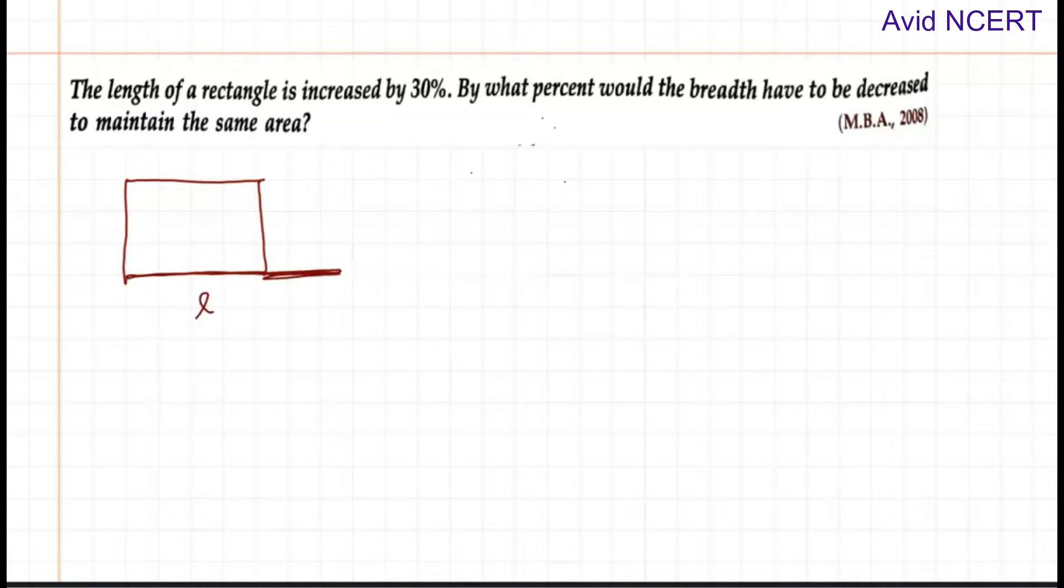If this length is increased by 30%, the new length, l' or l dash, equals l plus 30% of the initial length. What percent should the breadth be decreased to maintain the same area? The area can be found by length times breadth, so the new area A' equals l' times b'.